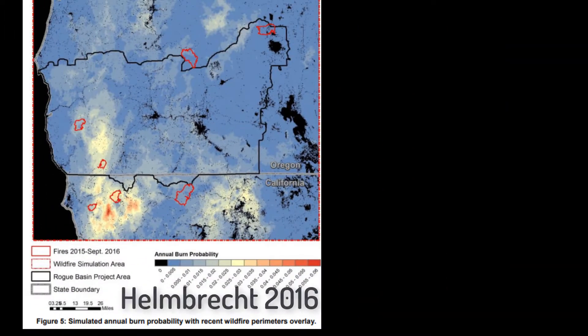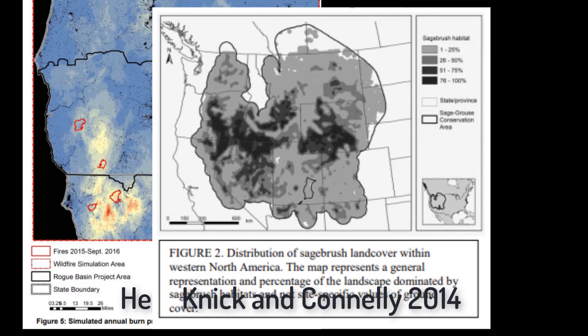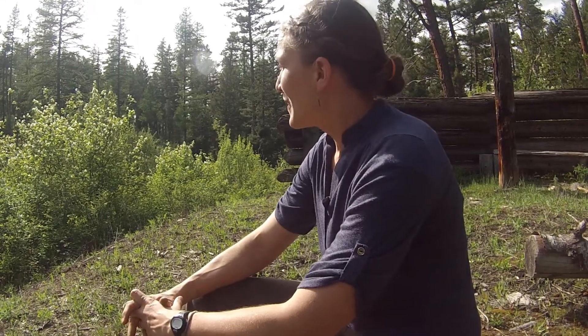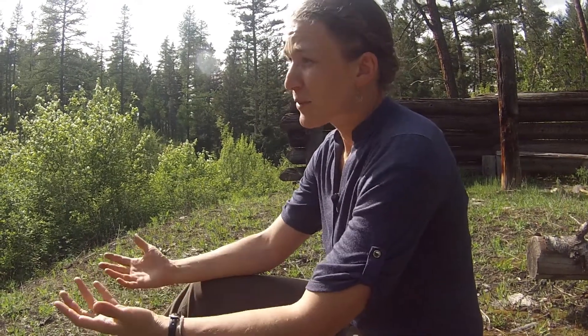Here are some other ways that LANDFIRE data can be used: comparing simulated burn probability with recent fire activity, mapping the distribution of sagebrush land cover, and mapping disturbance restoration needs. LANDFIRE data is pretty amazing, but this world is changing all the time, and so LANDFIRE data needs to be updated frequently as well.